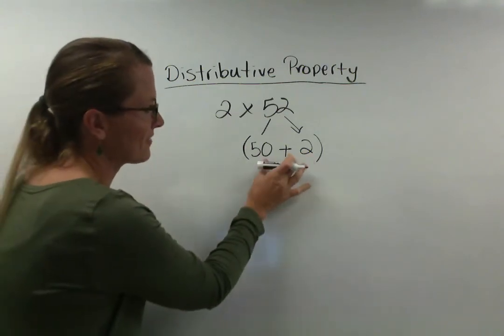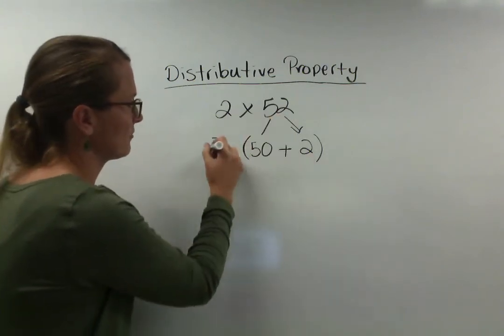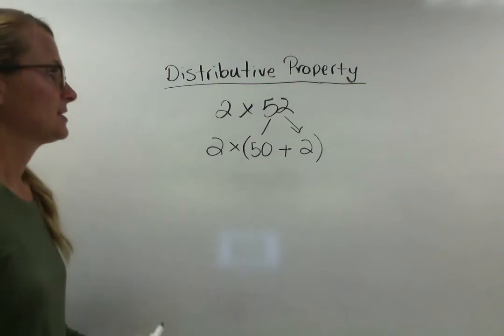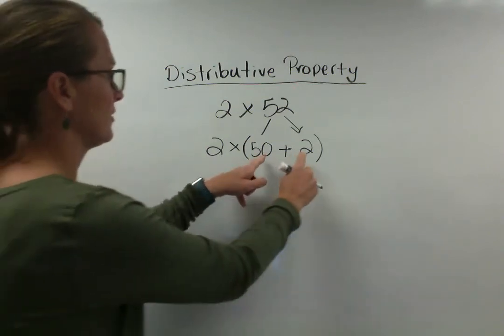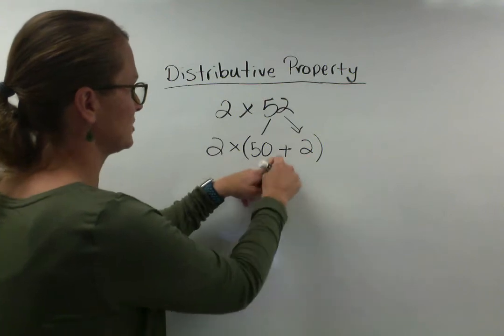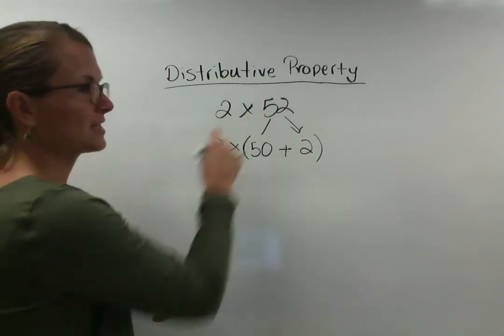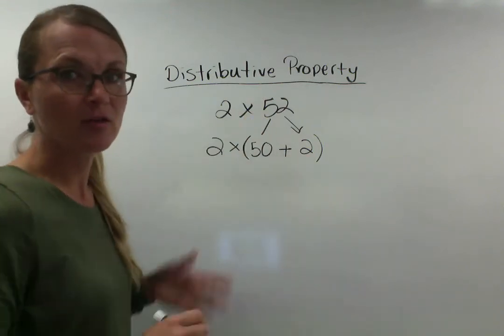And you have to add them together to get 52. So 2 times 52 is the same as 2 times (50 plus 2) because 50 plus 2 is 52. And when I multiply it by 2 it's going to equal the same thing. They both equal 104.